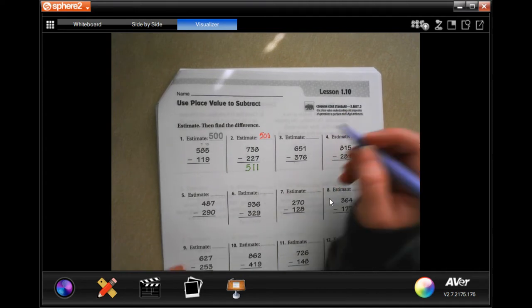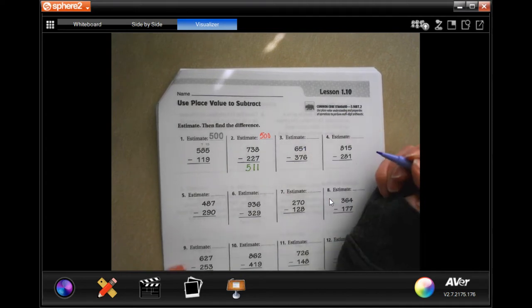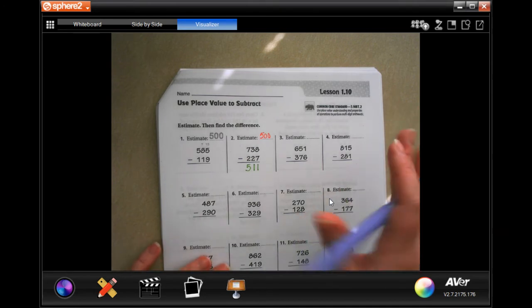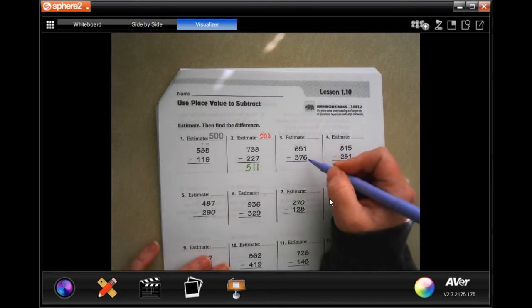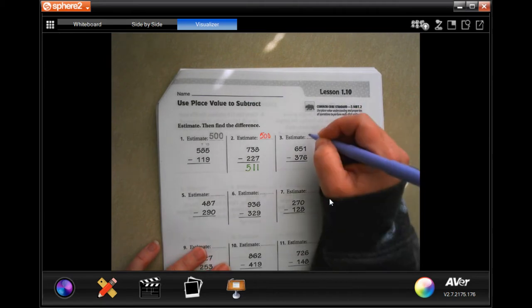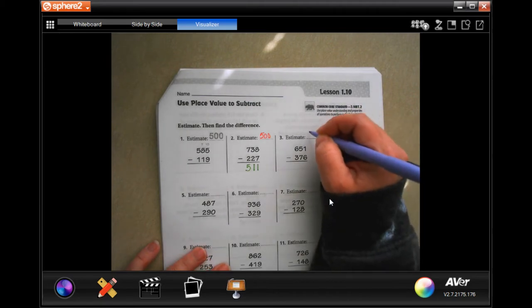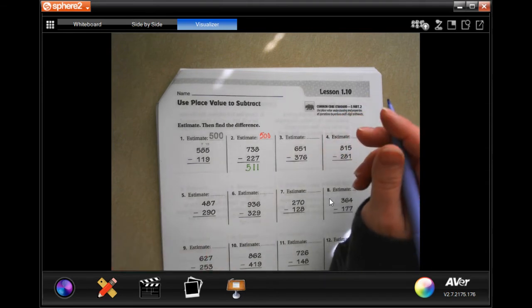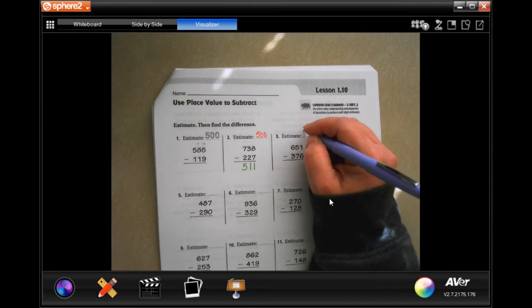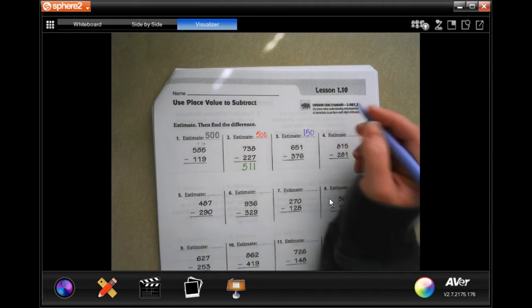So 651, we're going to round that to 650, and 376, we're going to round that to 400. So 650 minus 400 would be about 150-ish.